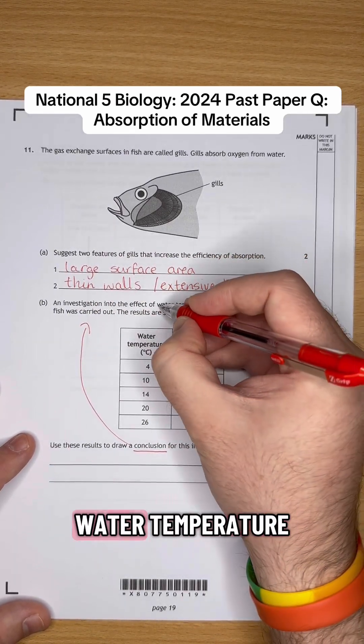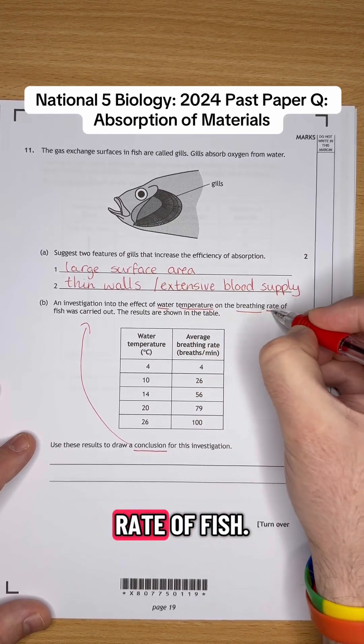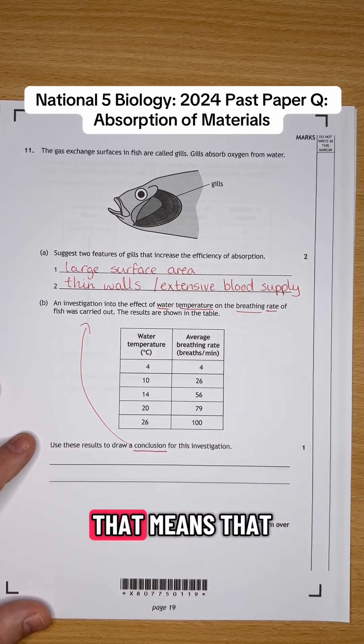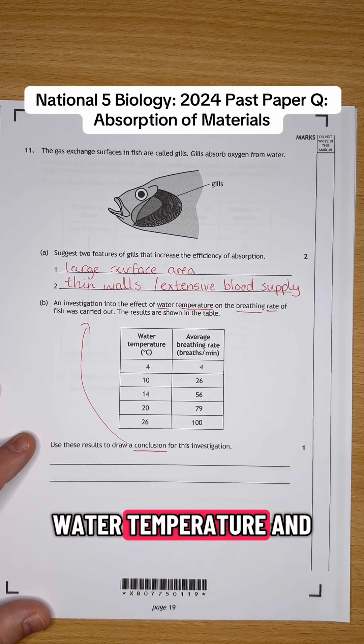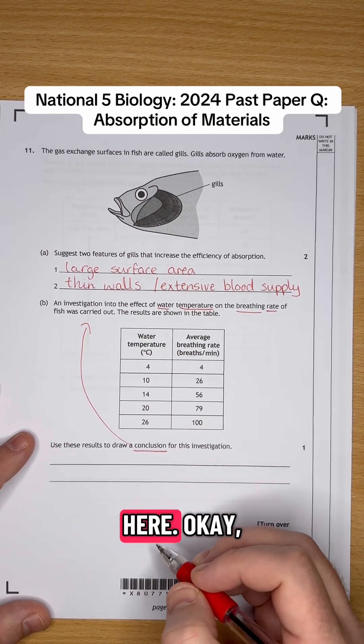The effect of water temperature on the breathing rate of fish, okay? So that means that water temperature and breathing rate should be in our answer here, in our conclusion here, okay?